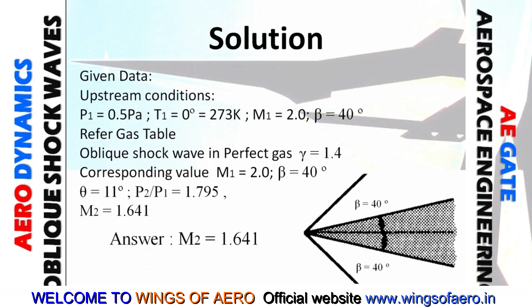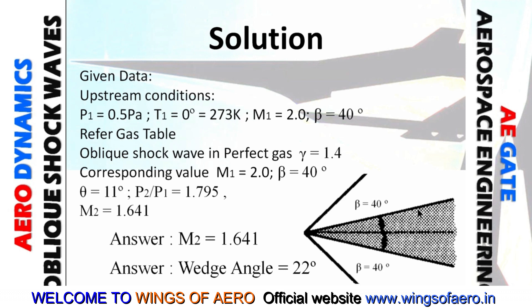For the wedge angle: this is a symmetric wedge. From the horizontal to each side of the wedge is 11 degrees (theta). So the complete wedge angle is 11 plus 11 equals 22 degrees. I hope this session was useful. You can also verify using the alternative analytical method.